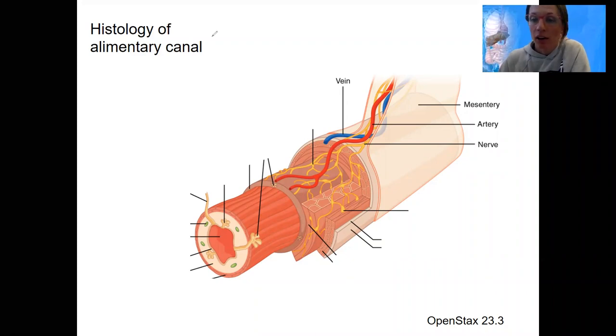The alimentary canal has similar structures throughout, so the histology is going to be similar. This is really important for the function. It's going to vary slightly, but this video covers the similarities between all of them.